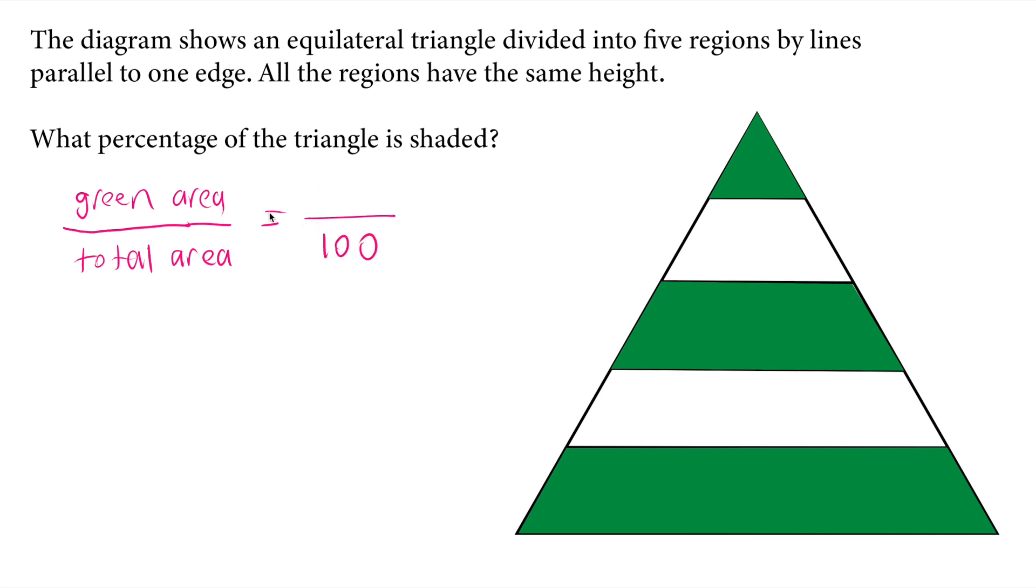Basically we are looking for green area in this question, and then we will place it right in the numerator once we find it. So I will draw some auxiliary lines, the parallel lines to the side lengths inside the shaded area.